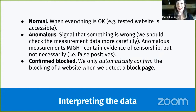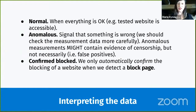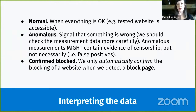Looking at data in aggregate means that instead of treating one anomalous measurement as evidence of censorship, it's useful to look at all measurements pertaining to testing a specific service on a specific network to see if all measurements present the same anomaly. If they all present the same anomaly, that's a strong indicator that it is actually blocked. If there are only one or a few anomalies, there may be false positives. To enable the community to look at data in aggregate, we are currently building a new tool called the OONI Measurement Aggregation Toolkit, through which you'll be able to choose parameters and automatically generate charts aggregating measurements for this type of analysis.